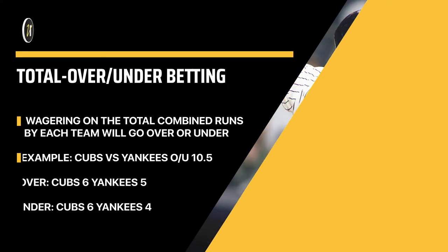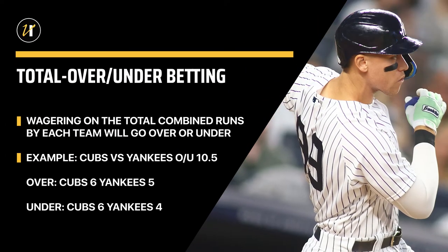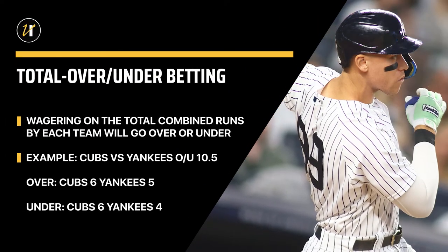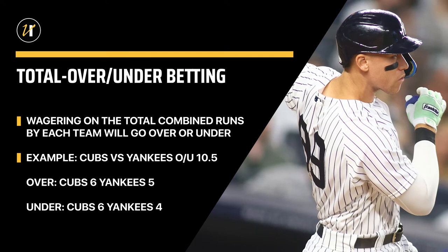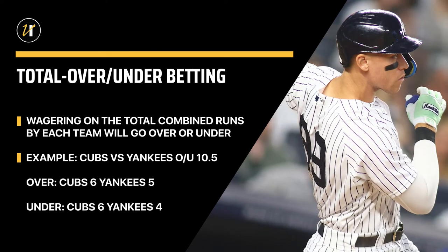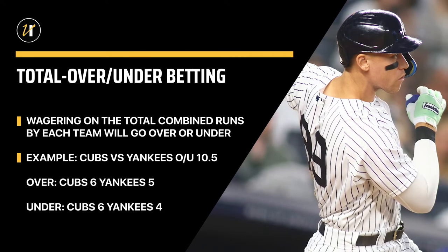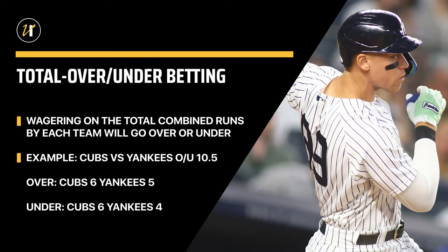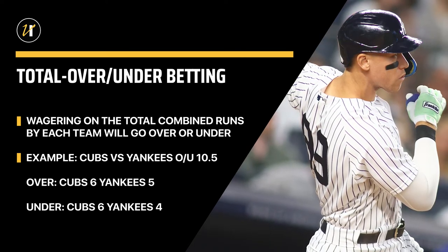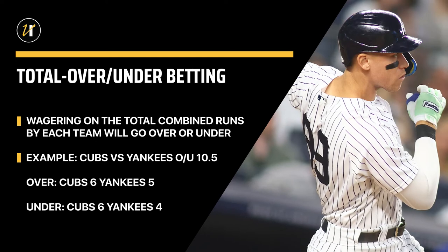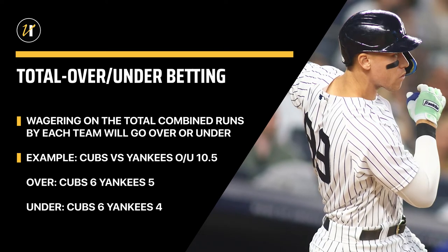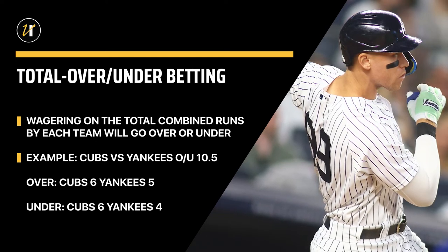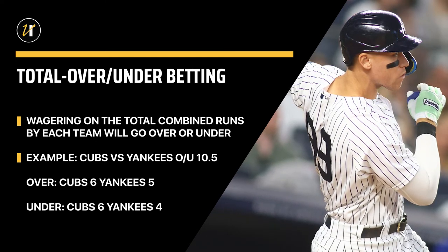If you're not interested in picking a winner or a loser, you can bet on the total, otherwise known as over/under betting. This is when the bettor will wager on whether the total combined runs scored by each team will go over or under a number set by odds makers.